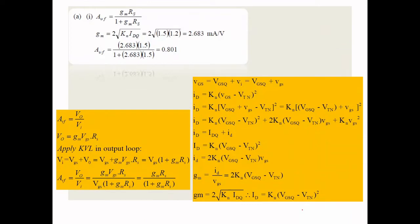If you have any problem like this, first you want to identify the feedback circuit, then we need to derive the transfer function. When you want to derive the transfer function, you first want to draw the equivalent model — that is the small signal model. First let me draw the common source model, because that is going to be a global model from which I will redraw for our given circuit.